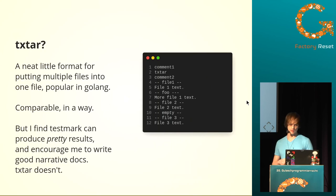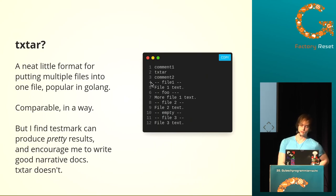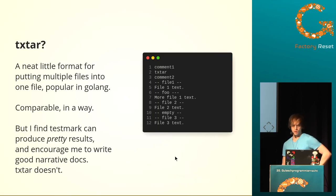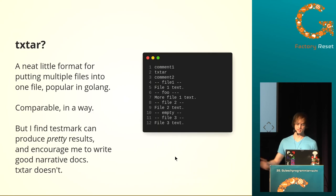Another alternative, at least for those who spend a lot of time in Golang, is something called TXtar. It's kind of a Golang special — I don't think any other language has heard of this. It's easy to parse, similarly splitting on lines that start with dash dash space. You could implement it in any language quickly. But I find this a lot less fun: I can't write a pretty narrative around it, it's not pretty, I can't render it to a website or to GitHub. So less power.